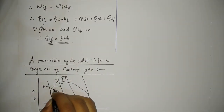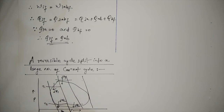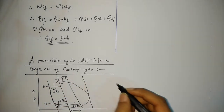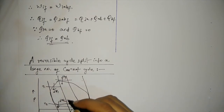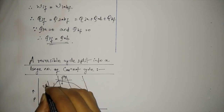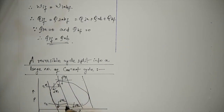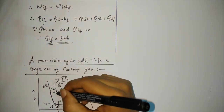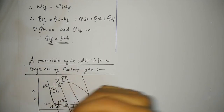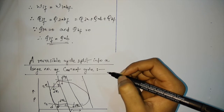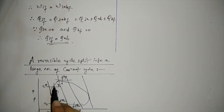Let this be dq1, dq2, dq3, and dq4, and so on. Now for the elemental cycle abcd: dq1 heat is absorbed reversibly at temperature t1, and dq2 is rejected reversibly at temperature t2. As you can see, t1 and t2 are marked, where dq1 is absorbed and dq2 is rejected from the Carnot cycle.